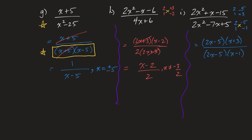Now I notice I can divide out my common factors, and I'm left with x plus three on top and x minus one on the bottom. We should automatically note that x cannot equal five halves from the factor that divided out, or one from the factor that remained.